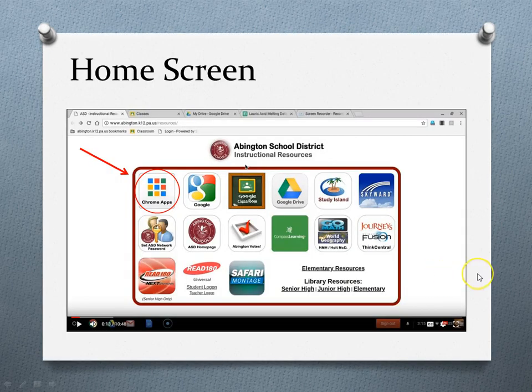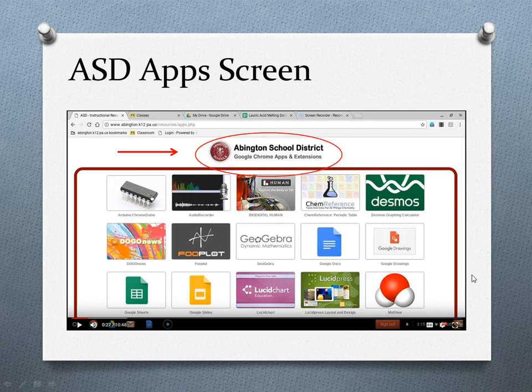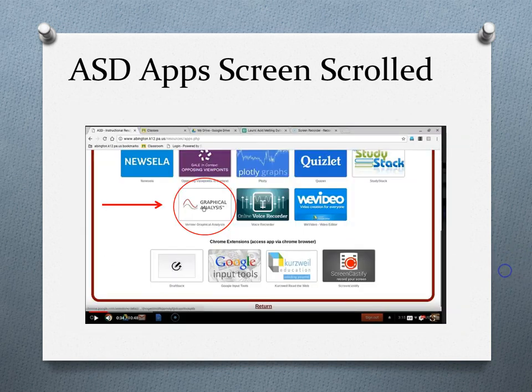So to begin with, you're going to log into your Chromebook and click on Chrome Apps, which will take you to the Abington School District Approved Apps page. From here you'll scroll down to the Graphical Analysis App, which is this one, and you'll click on it.